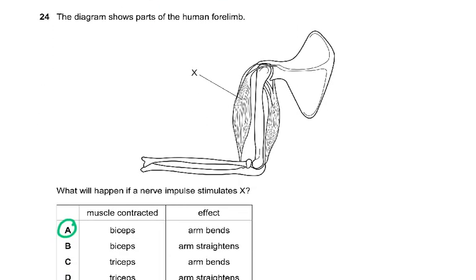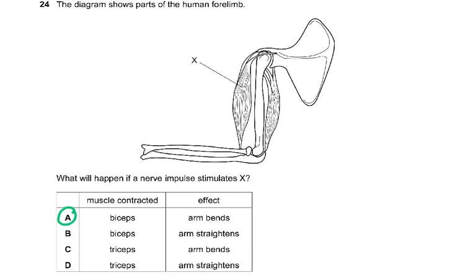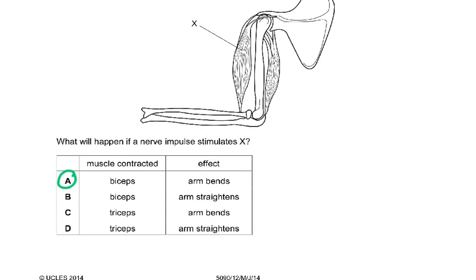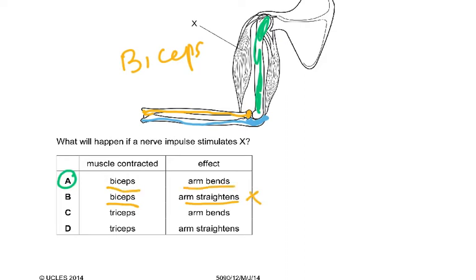Question 24: the diagram shows parts of the human forelimb. What will happen if a nerve impulse stimulates X? This is the humerus. This is the ulna, which makes a U-shape here. We also have the radius, which has a little cap on top. X is the biceps muscle. When the biceps muscle contracts, the arm bends — not straightens. The arm will bend at the elbow. So when a muscle is stimulated it contracts, and the biceps contracts, bending the arm at the elbow.